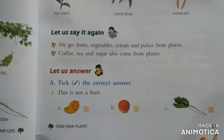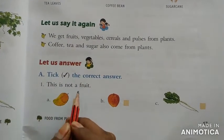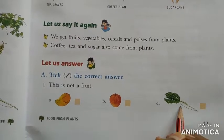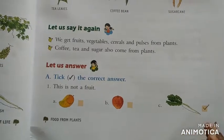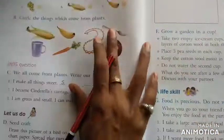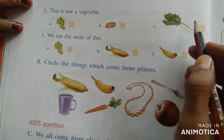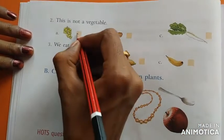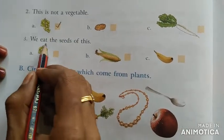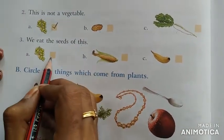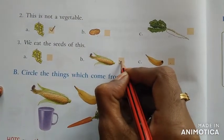On page number 70, tick the correct answer. Which is not a fruit — Mango, Apple, or Radish? Radish is not a fruit; it is a vegetable — tick answer C. Next: which is not a vegetable — Grapes, Potato, or Radish? Grapes are not a vegetable. Next: we eat the seeds of — Grapes, Corn, or Banana? We eat the seeds of Corn (Maize).